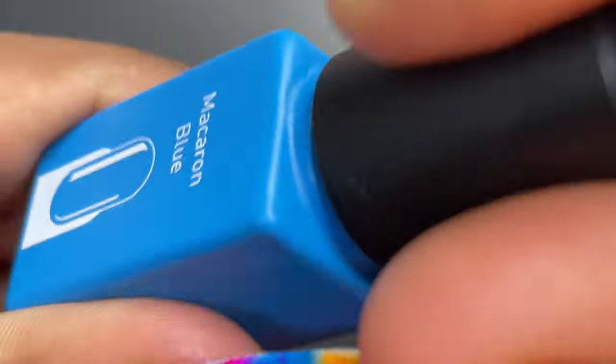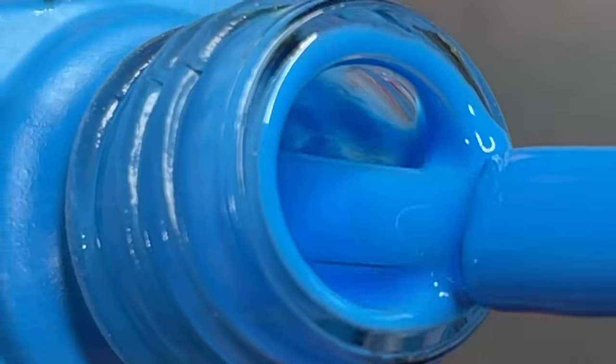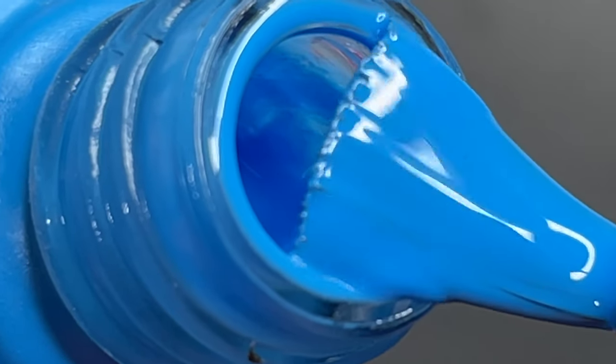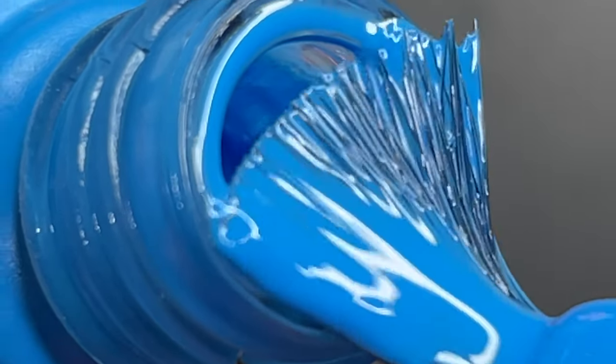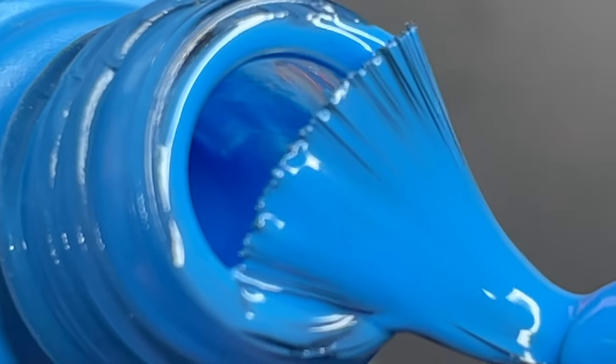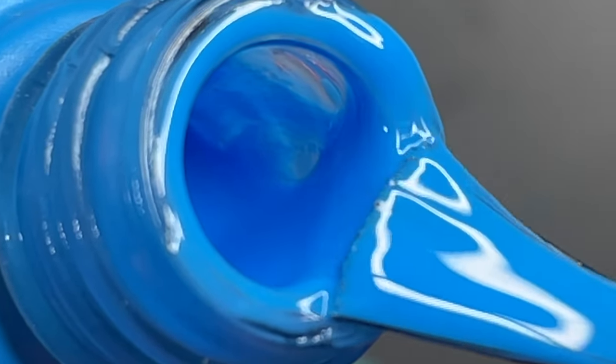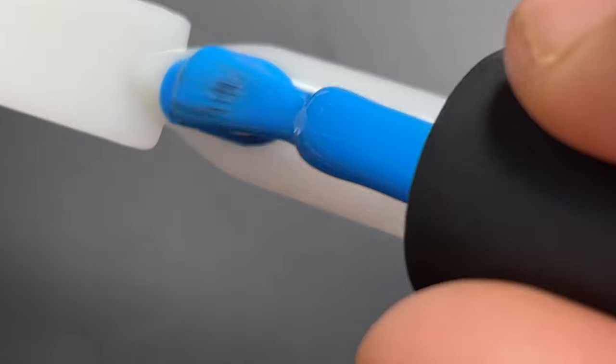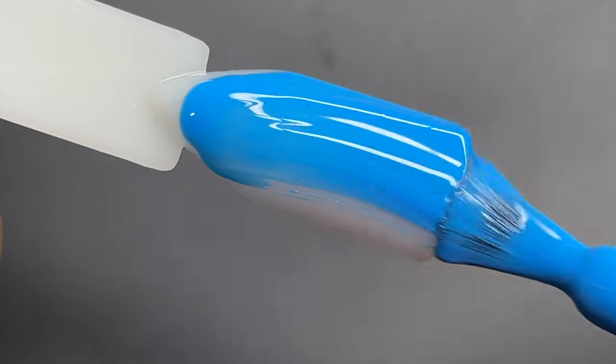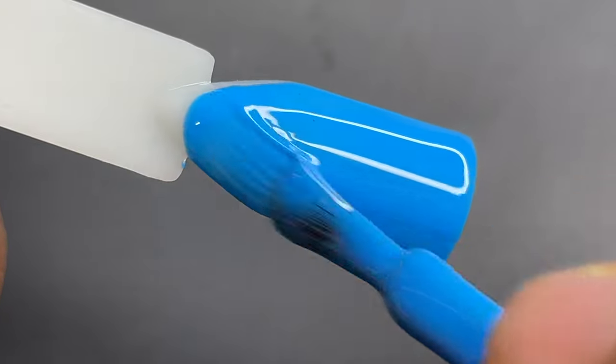As you can see, the color of the polish matches the bottle color so you can easily identify it. The polish is really creamy and very opaque and highly pigmented. As per their website, it's a very long-lasting polish and can be used on any kind of nails, whether it's natural nails, acrylic nails, or gel nails.